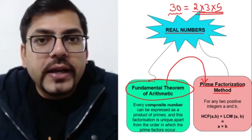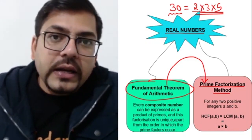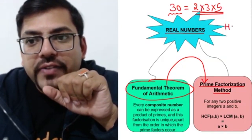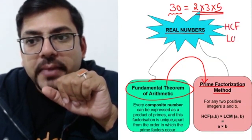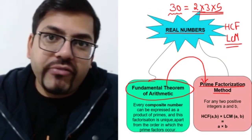After the exclusion of this Euclid thing, in real numbers only two things are remaining. First thing is finding HCF and LCM.